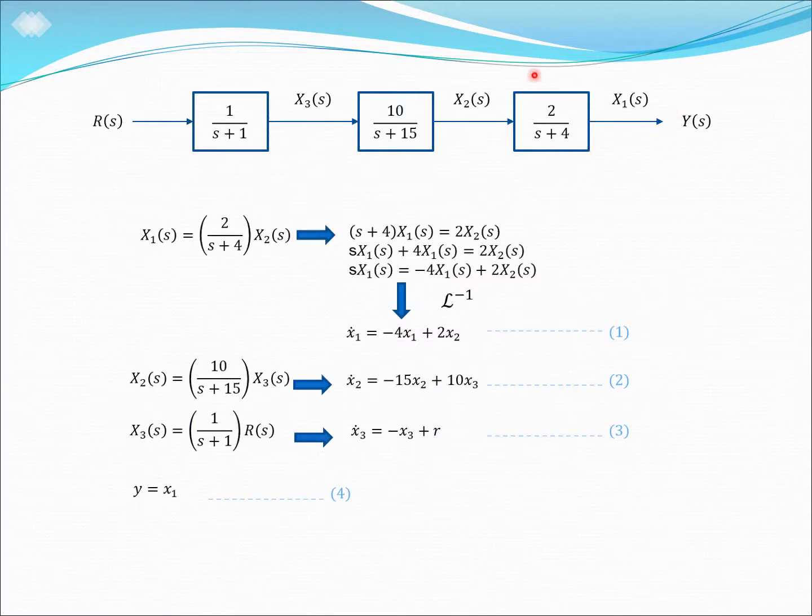And we are going to do the same thing as we have done before. We locate all our state variables over here, x1, x2, and x3, and repeating the same process to get the state space equation and the output equation. So we can see that using either process, we will get the same answer.